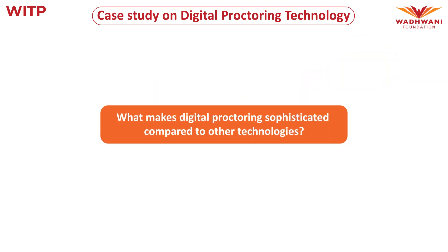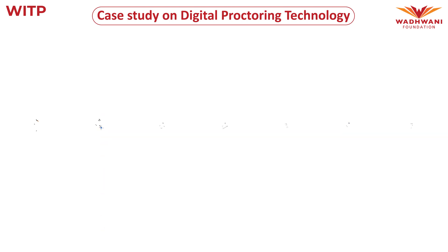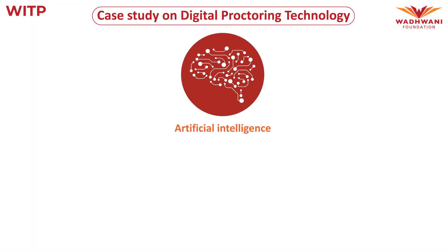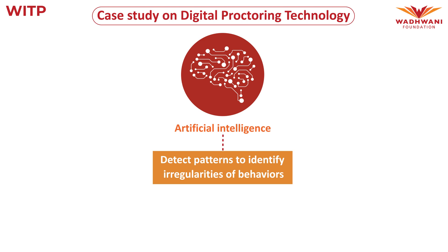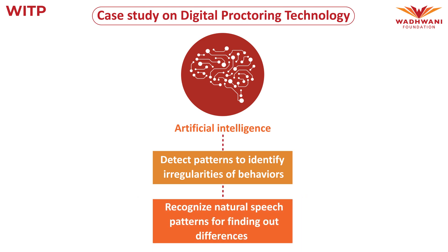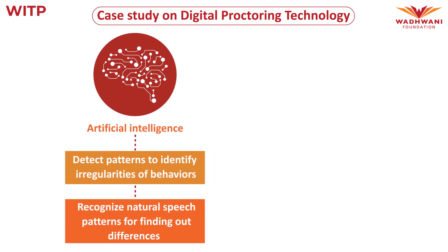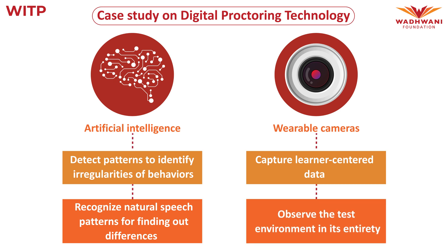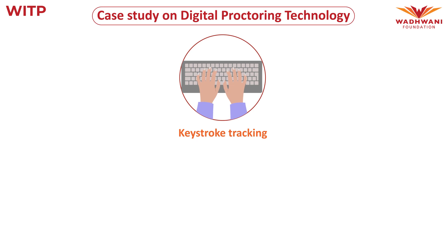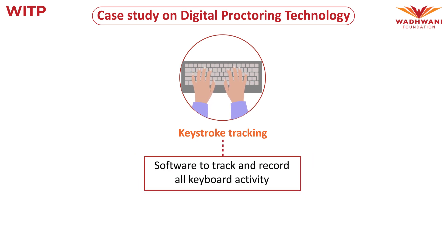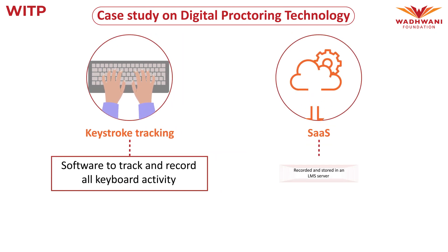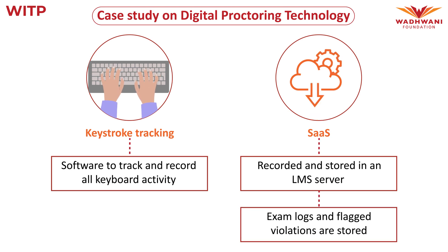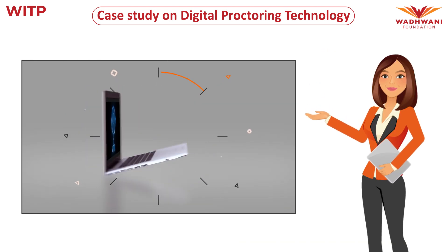Digital proctoring technology has become more sophisticated by combining several technologies. Artificial intelligence can detect patterns to identify irregularities of behavior and recognize natural speech patterns to find differences in the testing environment. Wearable cameras capture learner-centered data to analyze the test environment in its entirety. Keystroke tracking uses surveillance software to record all keyboard activity. The proctored session is recorded and stored in an LMS server integrated with cloud-based Software as a Service, or SaaS, with exam logs and flagged violations stored within.